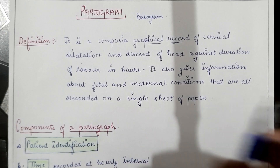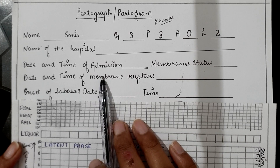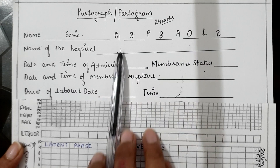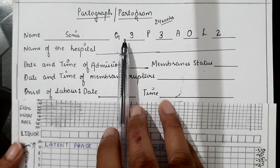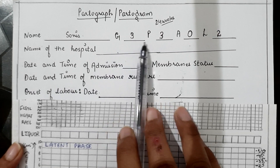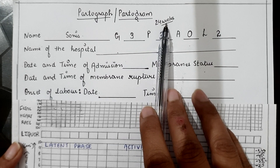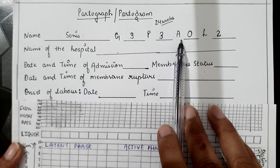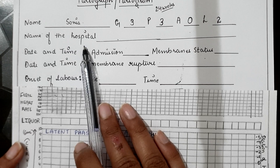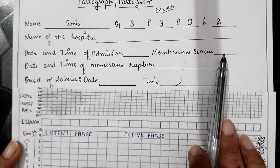The first component is patient identification. The partograph includes the patient's name, gravida, para, abortion, and live births. Gravida means the total number of pregnancies the woman has had, including the current one. Para means the number of pregnancies that completed 24 weeks, as 24 weeks is the viable period after which the fetus can survive outside the womb. Also recorded are the hospital name, date and time of admission, and the status of the membranes — whether intact or ruptured.